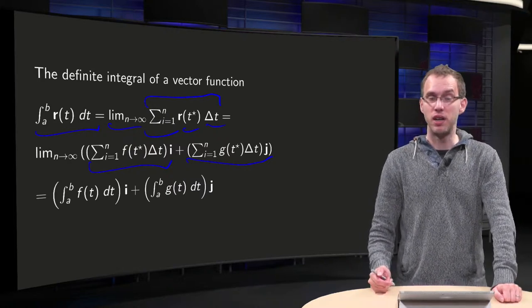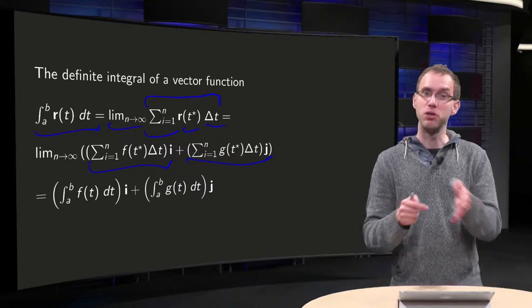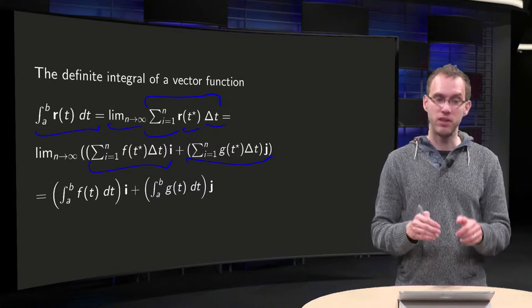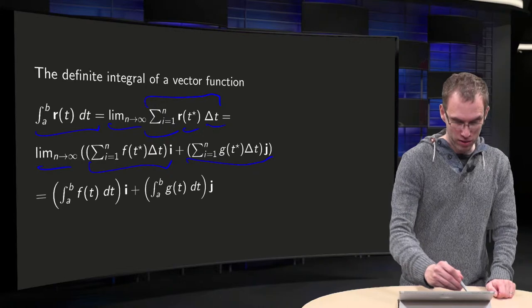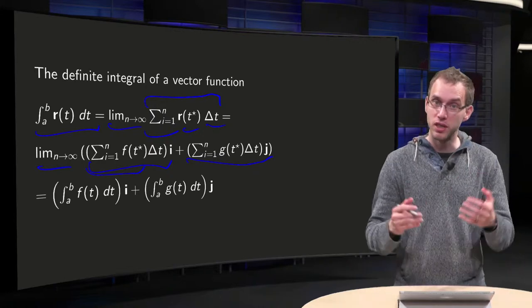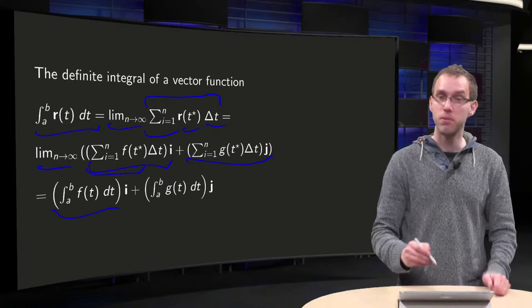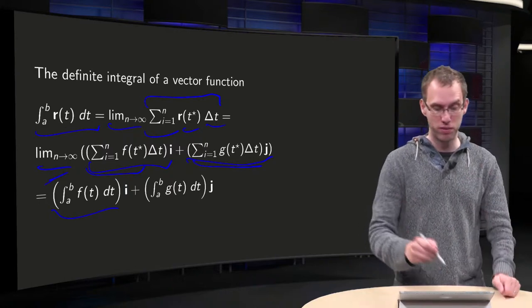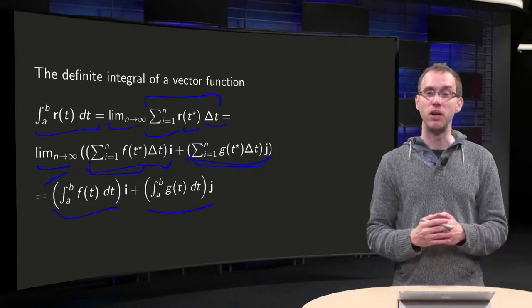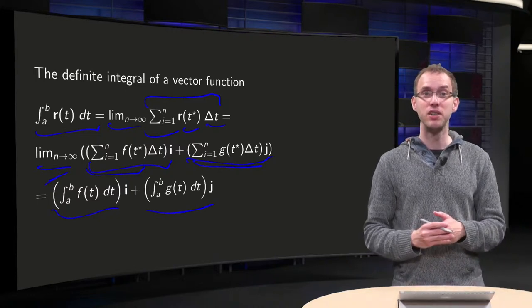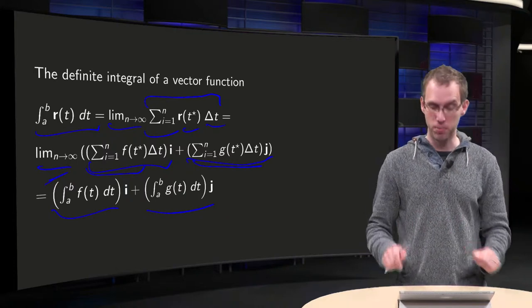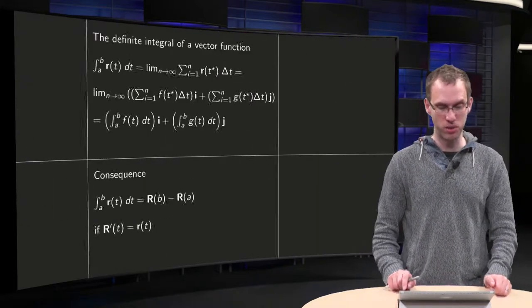But if those limits both exist, you can use the sum rule of limits and take the two separate limits. Then you get the limit n to infinity from this first sum, which is just the definite integral of f, plus the limit of this second sum, which is the definite integral of g. So, how do you have to integrate a vector function? Just integrate both components separately in the definite integral.